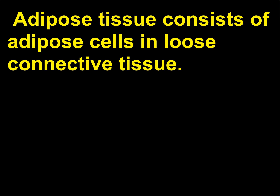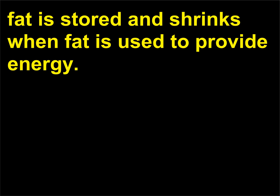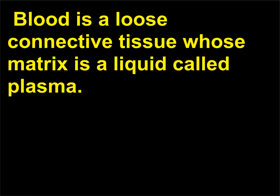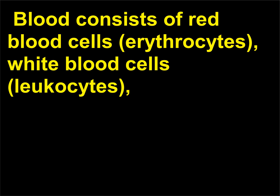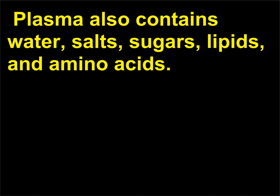Loose connective tissue is found beneath the skin and between organs. It is a binding and packing material whose main purpose is to provide support to hold other tissues and organs in place. Adipose tissue consists of adipose cells in loose connective tissue. Each adipose cell stores a large droplet of fat that swells when fat is stored and shrinks when fat is used to provide energy. Adipose tissue provides padding, absorbs shocks, and insulates the body to slow heat loss. Blood is a loose connective tissue whose matrix is a liquid called plasma. Blood consists of red blood cells, erythrocytes, white blood cells, leukocytes, and platelets, thrombocytes, which are tiny pieces of bone marrow cell. Plasma also contains water, salts, sugars, lipids, and amino acids.